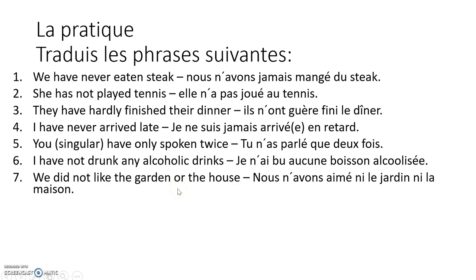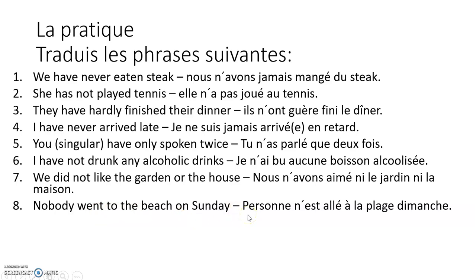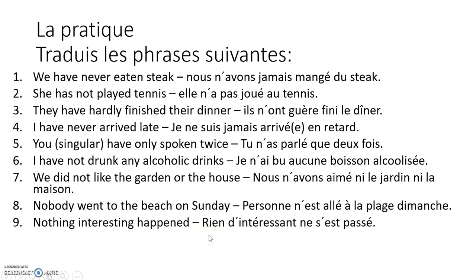'We do not like the garden or the house' — nous n'avons aimé ni le jardin ni la maison. We have ne before the auxiliary, then the past participle, then ni... ni... 'Nobody went to the beach on Sunday' — personne n'est allée à la plage dimanche. We start with personne, then the negative particle, then the auxiliary, then the past participle, and then whatever we need to finish the sentence.